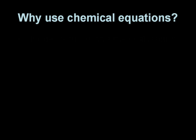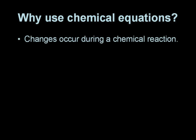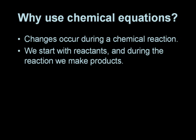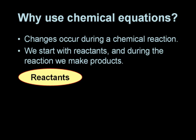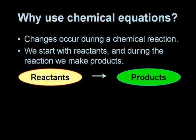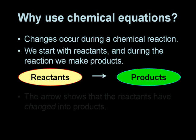So why do we use chemical equations to summarise what happens in a chemical reaction? Well, as you've already seen, changes occur during a chemical reaction. The material we start with is called a reactant and during a reaction we make a product. In some cases we start with several reactants and finish with several products. The arrow shows us that the reactants have changed into products.